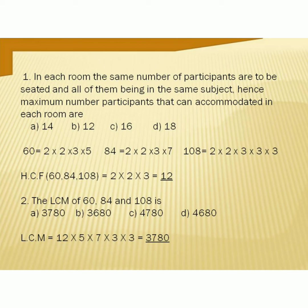Question 2 is a direct question: find the LCM of 60, 84, and 108. Multiply the common and uncommon factors to get the LCM. The answer is 3780.